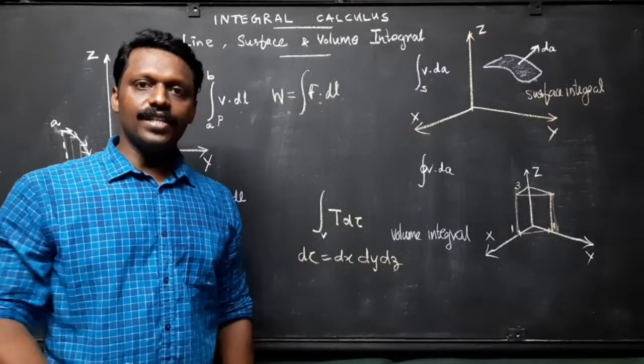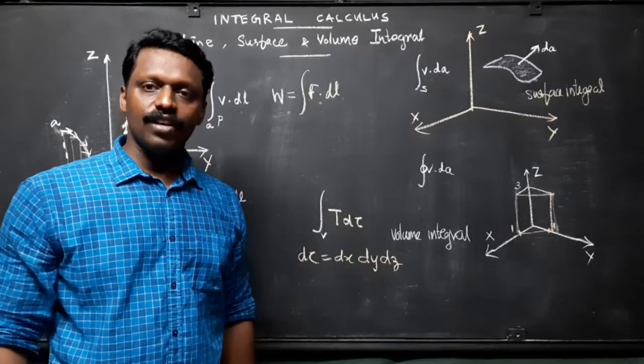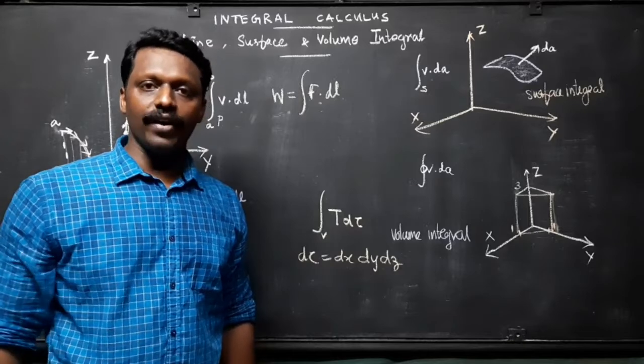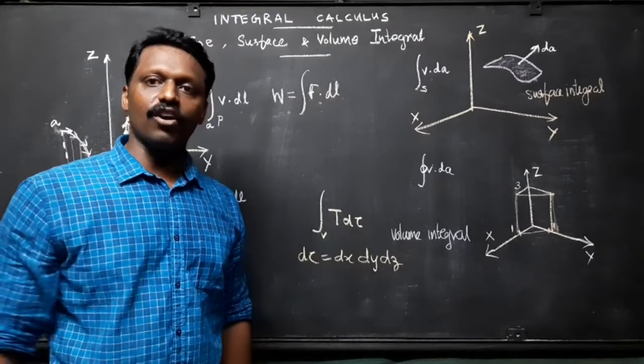For example, if t is the density of a substance, which might vary from point to point, then the volume integral would give the total mass.